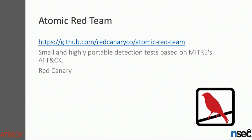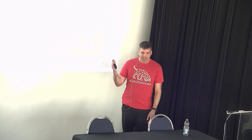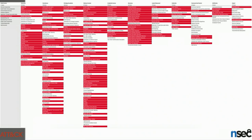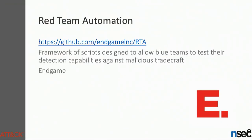When you've built some detections, maybe you want to test them. Red Canary built the Atomic Red Team project, which are small and highly portable detection tests based on MITRE ATT&CK — all YAML files. They have a Slack channel where you can discuss detection and they also do Atomic Fridays almost every month with a webinar at lunchtime. There's another similar project called Red Team Automation from Endgame — almost the same thing but built in Python, and it is slightly less maintained.